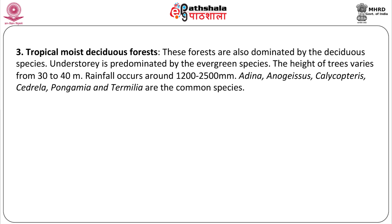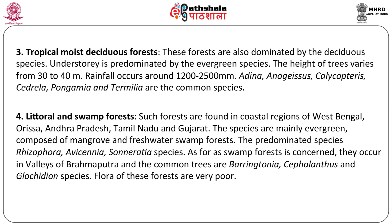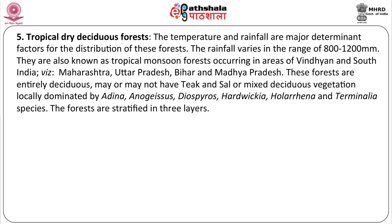Tropical moist deciduous forest: These forests are also dominated by the deciduous species. Understory is predominated by the evergreen species. The height of trees varies from 30 to 40 meters. Rainfall occurs around 1200 to 2500 millimeters. Next is the littoral and swamp forest. Such forests are found in coastal regions of West Bengal, Orissa, Andhra Pradesh, Tamil Nadu and Gujarat. The species are mainly evergreen, composed of mangrove and freshwater swamp forests. Tropical dry deciduous forests: temperature and rainfall are major determinant factors for distribution, with rainfall varying in the range of 800 to 1200 millimeters.